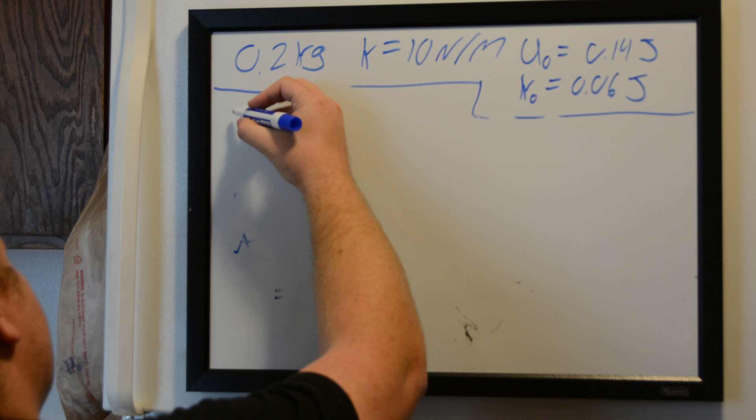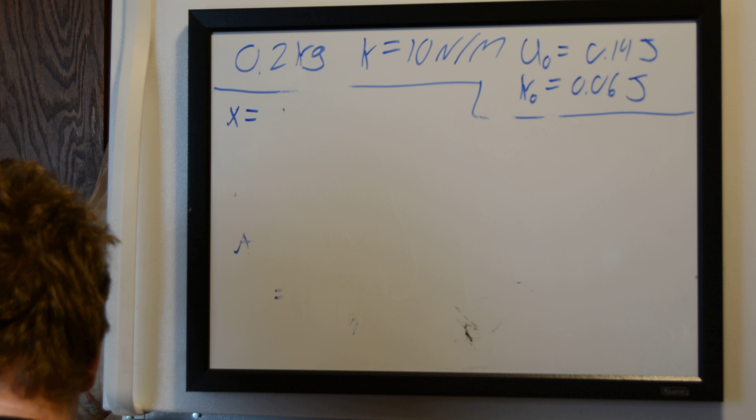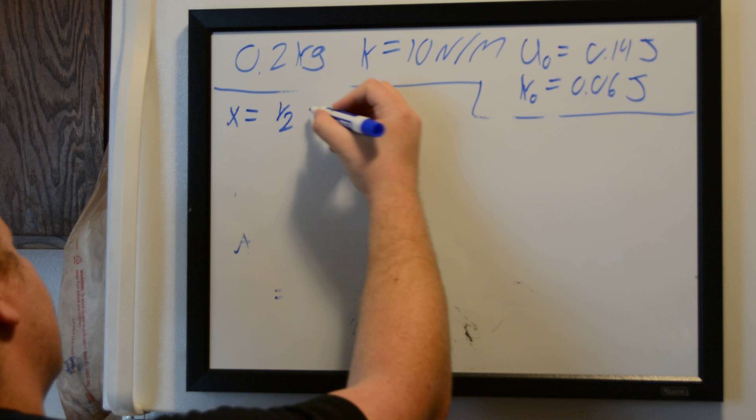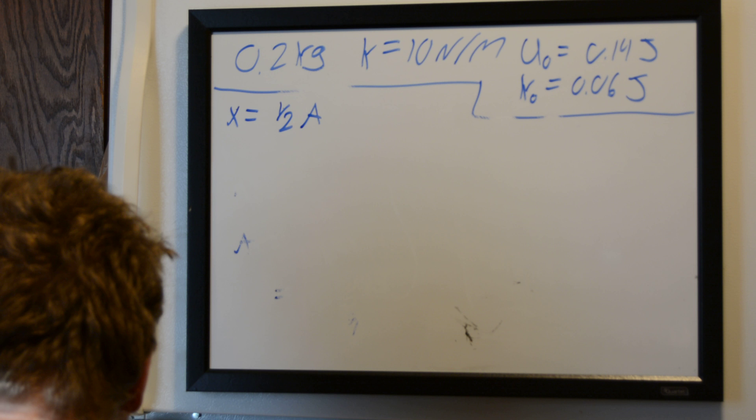And that simply is just when our displacement x is equal to half of the amplitude. We found that earlier. And then the next problem asks us to find the phase angle when our velocity is positive and our displacement is negative.